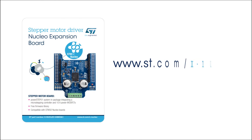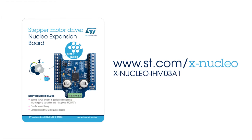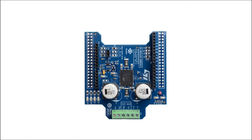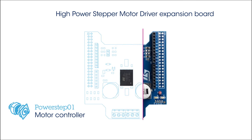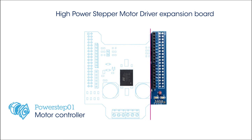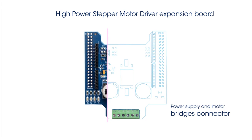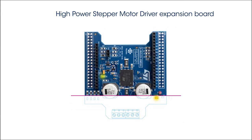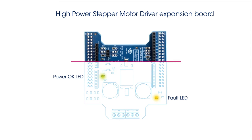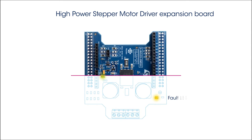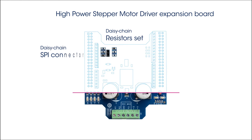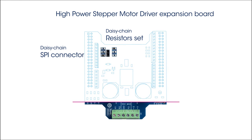Information on how to obtain the board can be found on www.st.com/XNucleo under the reference XNucleo IHM03A1. The board is built around the PowerStep01 system and package, integrating micro-stepping controller and 10 ampere power MOSFETs, a power supply and motor bridges connector, a power OK and fault LED to check the alarms reported by the PowerStep01, an SPI connector and resistors set to configure each board for daisy chaining.